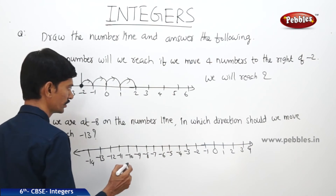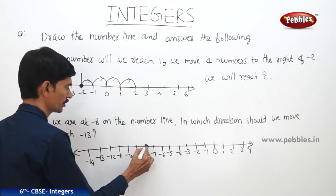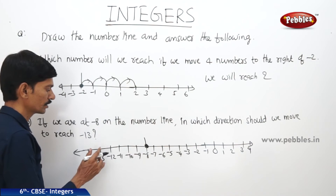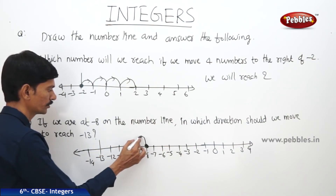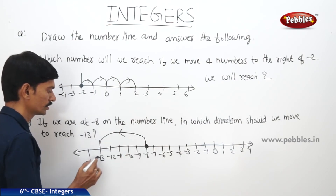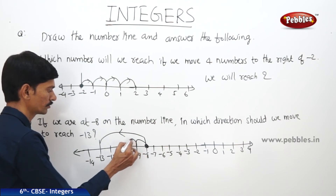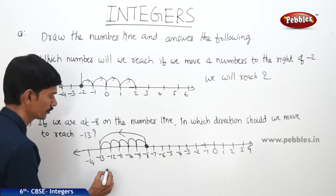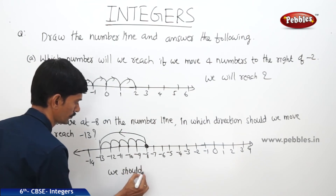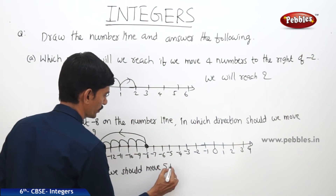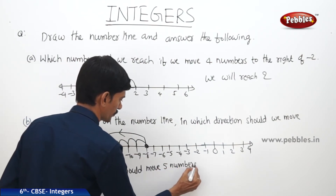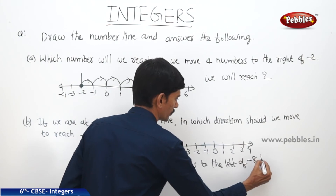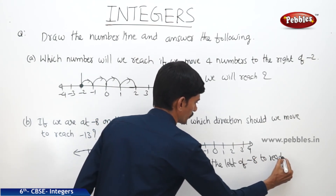If we are at minus 8 on the number line and we want to reach minus 13 — minus 13 is to the left of minus 8. So we have to move to the left of minus 8 to reach minus 13, moving 1, 2, 3, 4, 5 numbers to the left.